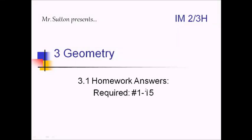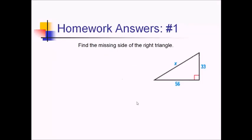Hello there. Mr. Sutton bringing you the IM23 Honors 3-1 homework answers on triangle theorems. For number one, we're trying to find this missing x side of this right triangle. Since it's a right triangle, we can use our Pythagorean theorem to find that missing side.